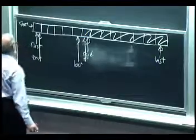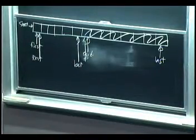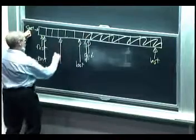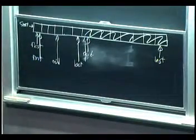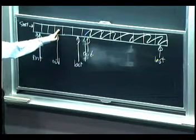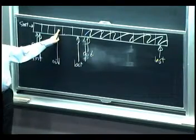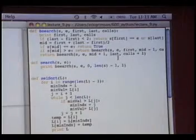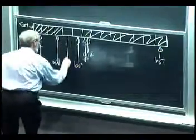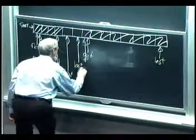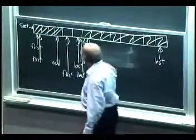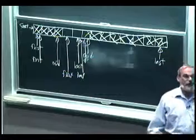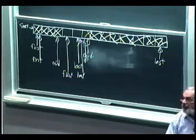On each recursive call, first and last narrow the range. If the element is bigger than the midpoint, first is updated to mid plus one instead. Notice what happens — most of the list gets thrown away at each stage. It cuts down quickly as we go along.